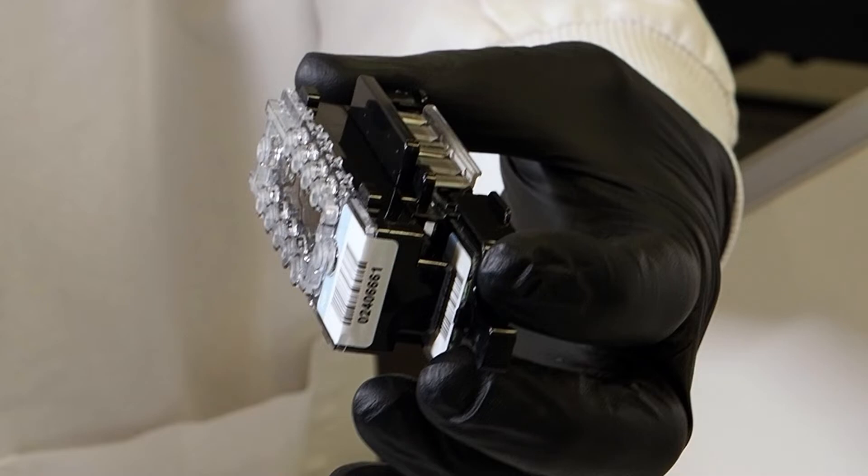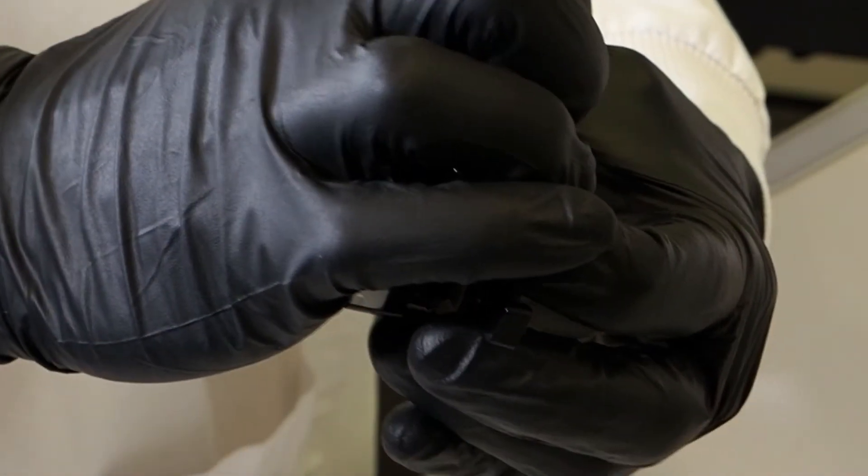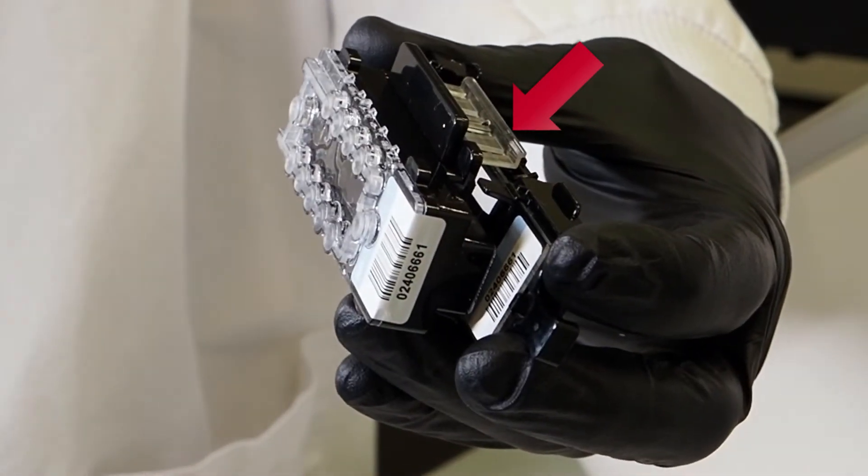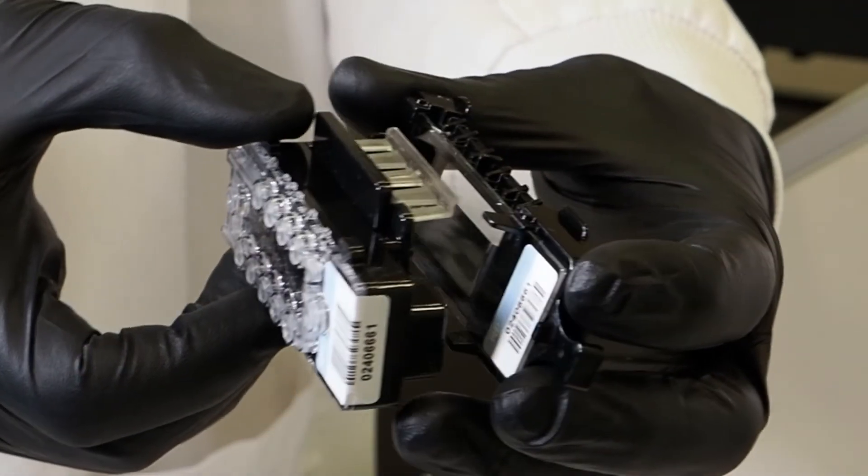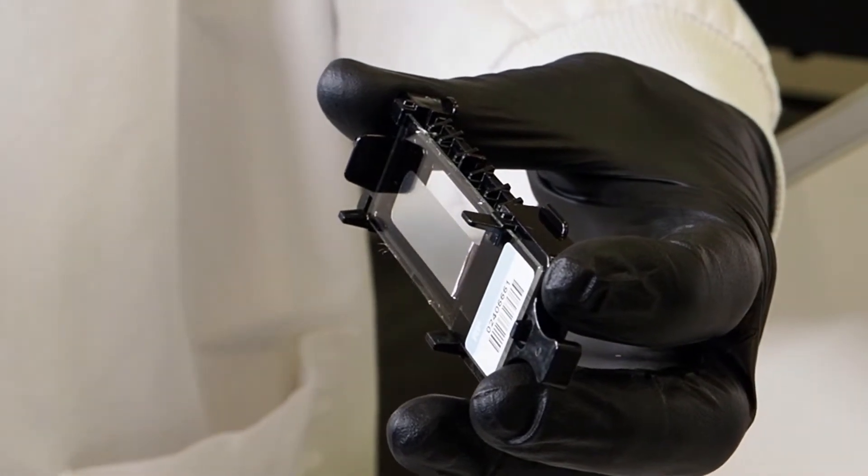Use one hand to grasp the substrate holder. Use the other hand to lift the clear plastic retaining clips along one edge of the reagent pack. When one side of the reagent pack is released from the substrate holder, the two pieces will easily separate.